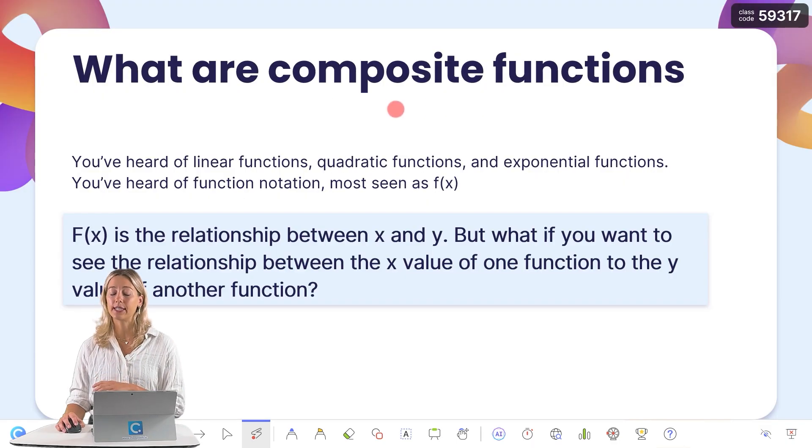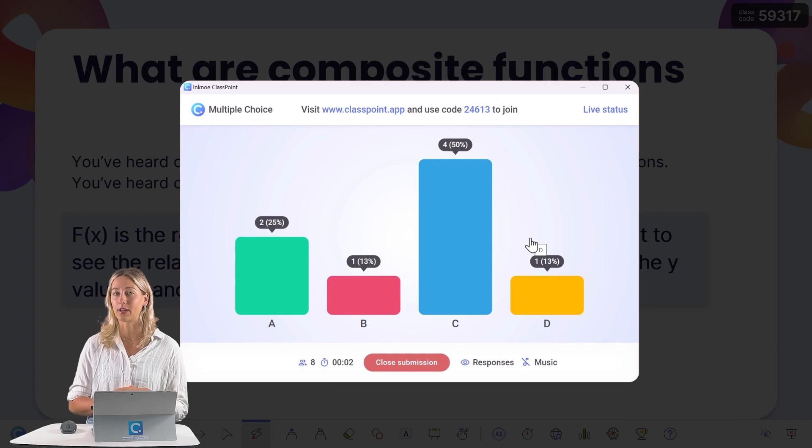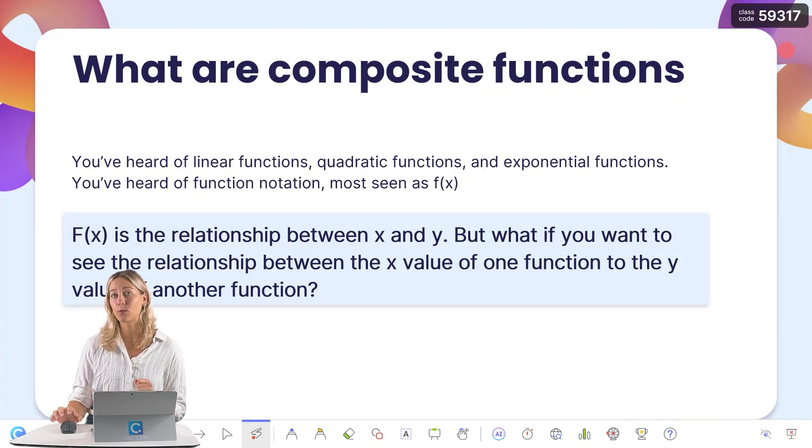Now, one thing that I do want to point out is that ClassPoint has this class code here in the top corner. So this is if you are having your audience join in to access those interactive quiz questions and receive live responses. So if you're just using ClassPoint for this laser pointer, we can actually remove this class code so it doesn't distract your audience.